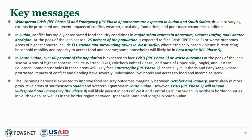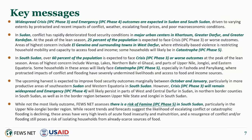The upcoming harvest is expected to improve food security outcomes marginally between October and January, particularly in more productive areas of southeast Sudan and Western Equatoria in South Sudan. However, crisis IPC phase 3 will remain widespread and emergency IPC phase 4 will likely persist in parts of West and Central Darfur in Sudan, in northern border counties in South Sudan, and in the border region between Upper Nile state and Jonglei. While not the most likely outcome, FEWS NET assesses there is a risk of famine in South Sudan, particularly in the Upper Nile-Jonglei border area, where high levels of acute food insecurity and malnutrition persist and resurgence of conflict or flooding still poses a risk of isolating households from already scarce food sources.